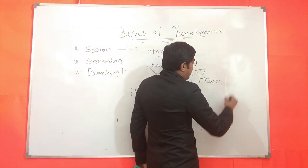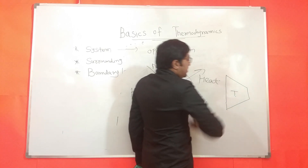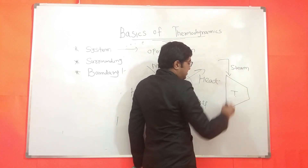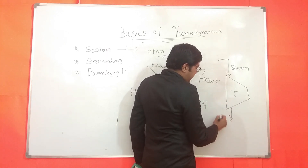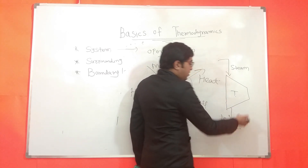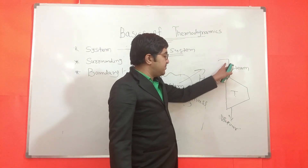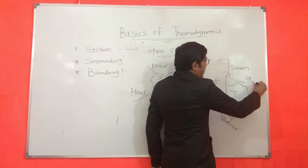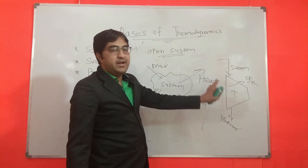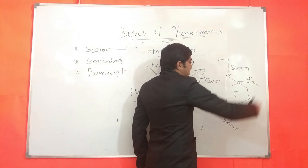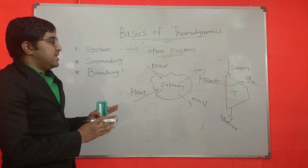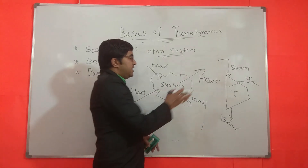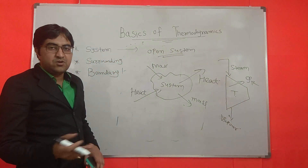Let us take one example of an open system — consider a turbine. In case of a turbine, steam transfers from inlet to outlet, where the outlet is vapor or wet steam. This is a transfer of mass. Additionally, the turbine rejects heat to the atmosphere, so there is also a transfer of heat. Therefore a turbine is an example of an open system, where both heat and mass are transferred.